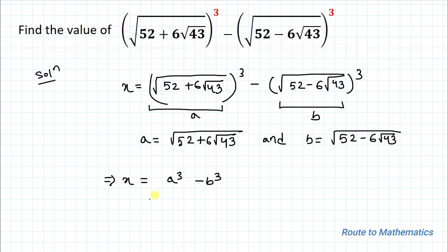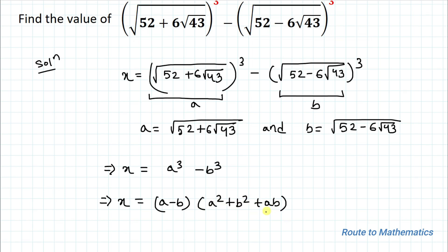Now applying the algebraic identity for A cube minus B cube, we have x equals (A minus B) multiplied with (A squared plus B squared plus AB). Let's find each term of this expression to get the answer for x.